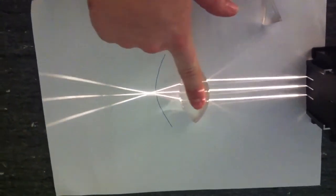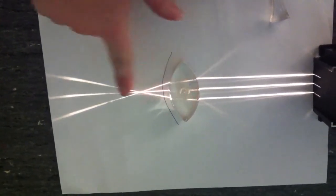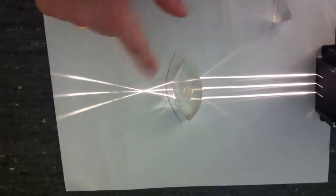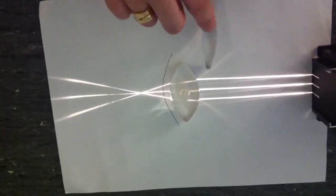Now for long-sightedness, where the light is focused behind the retina, we use another convex lens.